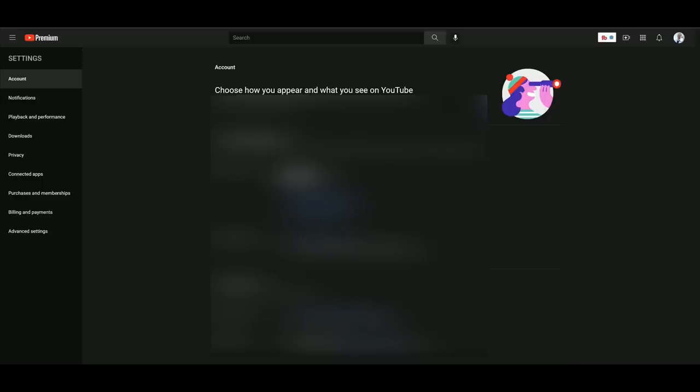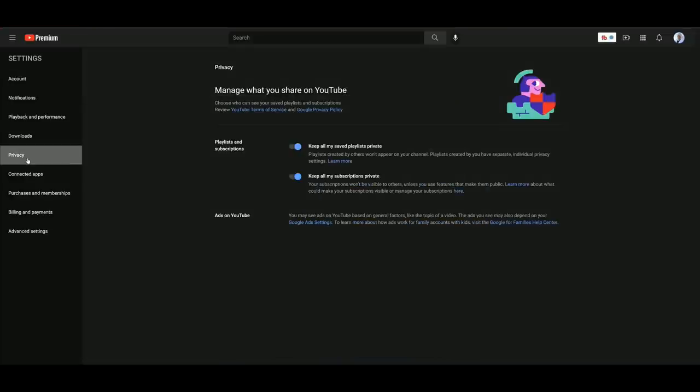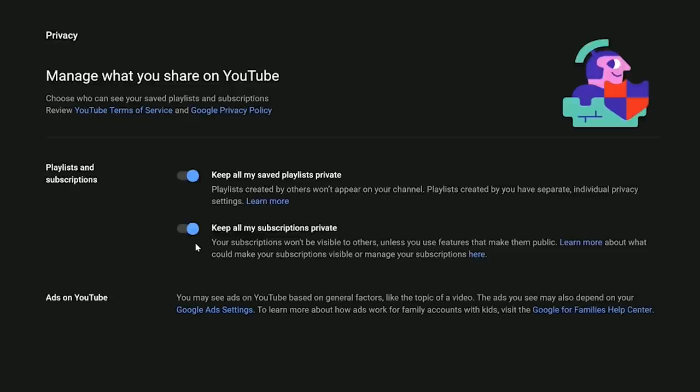To change this setting, click on your icon in the upper right-hand corner, scroll down to settings, click on settings. Over on the left-hand side, scroll down to privacy, click on privacy, and this toggle switch right here says keep all my subscriptions private. Go ahead and untoggle that, and you're ready to go.